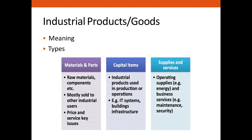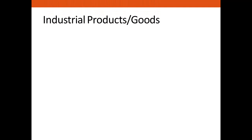The types of industrial products are: first, materials and parts; second, capital items; third, supplies and services. Materials mean raw material components — without raw materials we can't make a full product. Capital items are industrial products used in production or operations, for example IT systems, buildings, and infrastructure. Supplies and services include operating supplies such as energy, manpower, machines, and business services like maintenance and security.